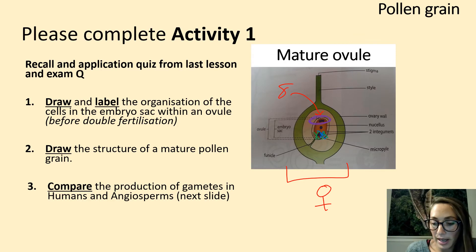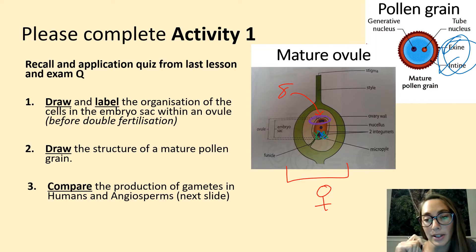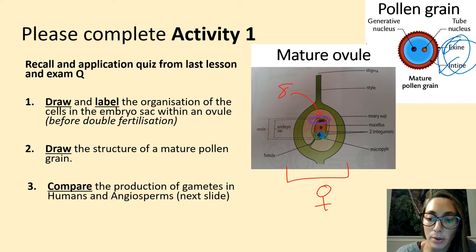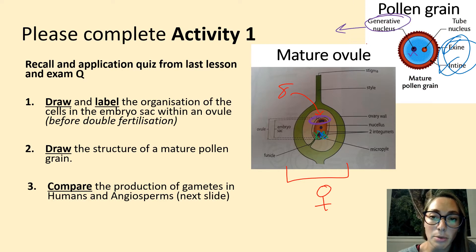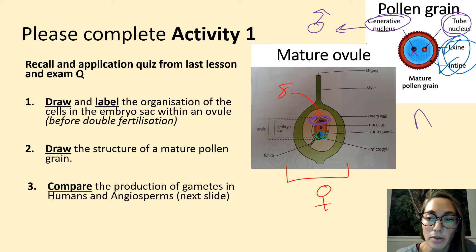Draw the structure of a mature male pollen grain. The outside layer is called the exine and the inside layer is called the intine; together they help prevent the pollen grain from becoming dehydrated. We also have two haploid nuclei in the center: the generative nucleus, which will divide during double fertilization to produce the male gametes, and the tube nucleus, which helps with the growth of the pollen tube. Both nuclei are haploid (n).